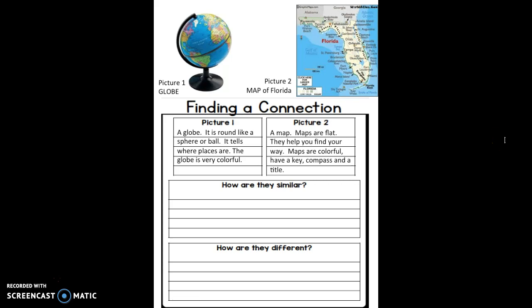They help you find your way. Maps are colorful. They have a key, a compass rose, and a title. So now that we've kind of observed our information a little bit further, let's think about how they are similar.